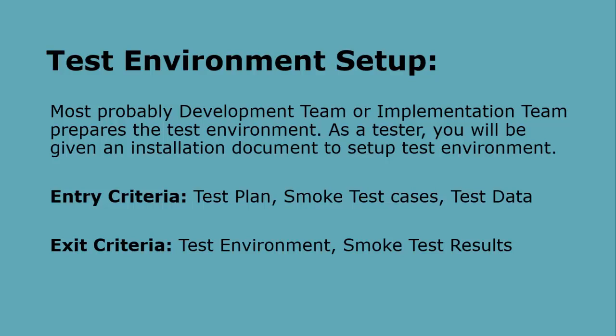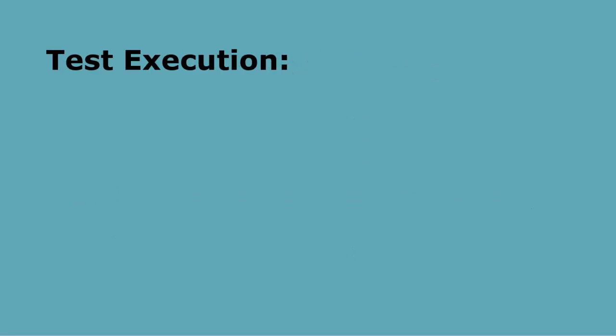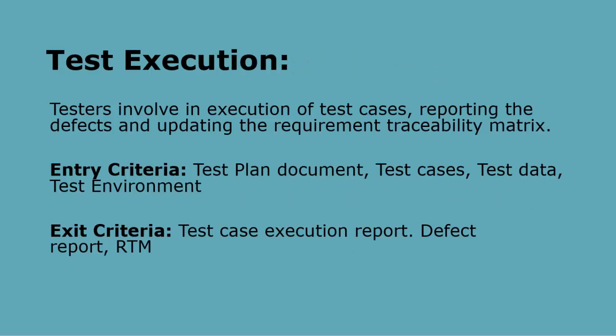Test Execution: Exit criteria for test environment setup are the test environment and smoke test results. In the test execution phase, testers are involved in execution of test cases, test environment monitoring, test results reporting, reporting defects, and updating the requirement traceability matrix. Entry criteria: test plan document, test cases, test data, and test environment. Exit criteria: test case execution report, defect report, and RTM.